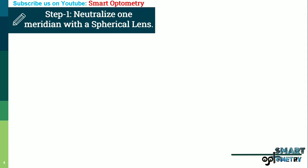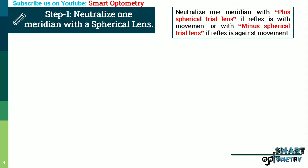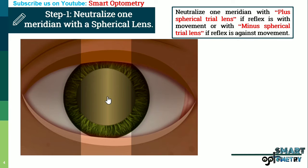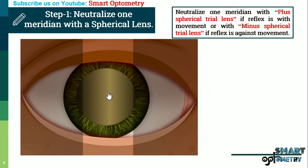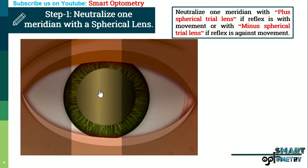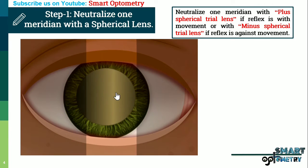Step 1: neutralize one meridian with a spherical trial lens. Neutralize with a plus spherical trial lens if the reflex is with movement, or with a minus spherical trial lens if the reflex is against movement. In this meridian the movement is with, so we will neutralize it with a trial lens that produces against movement. A plus lens produces against movement, so we will use a plus lens to neutralize this meridian.